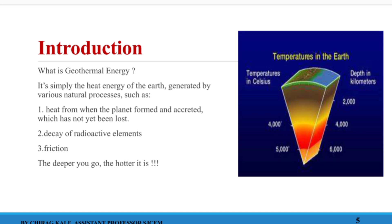Coming to the introduction, geothermal energy is simply the heat inside the earth. Initially, your earth was a hot sphere of gases which then evolved into a solid hot sphere, and it is now a habitable planet. But that particular heat is still stored inside our earth's crust in the form of magma. There are also radioactive elements which radiate energy and keep the core heated, plus friction among the magma flowing inside the earth. The temperature range at the center of earth is around 5000 degree Celsius at 6000 kilometers depth. Even getting around 200 degree Celsius is quite enough to generate power.